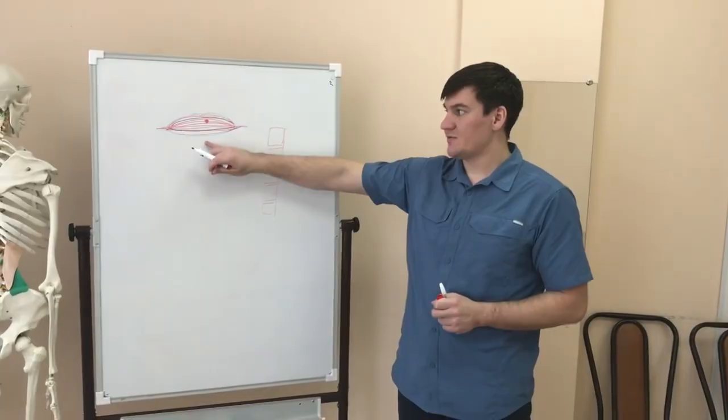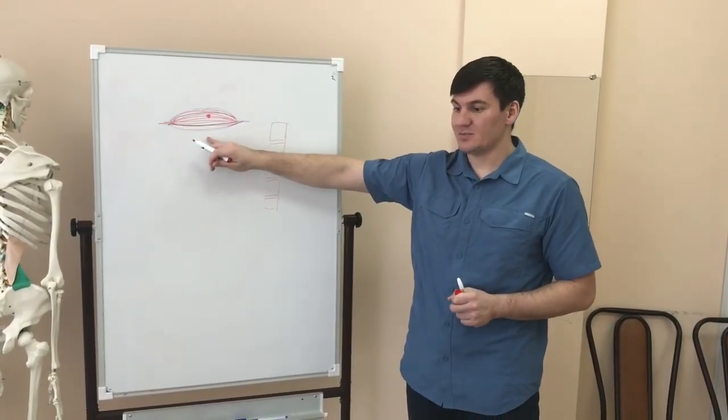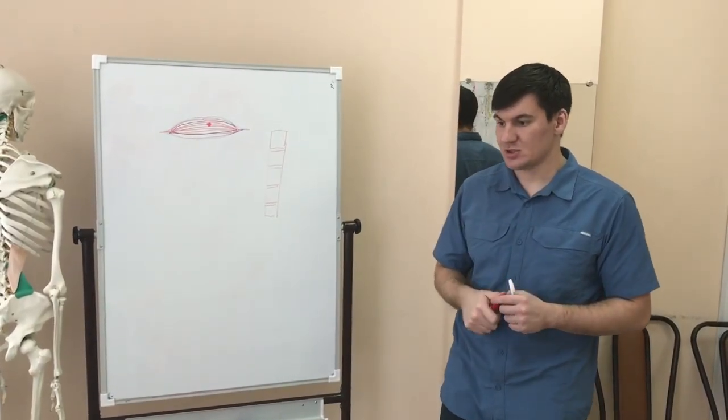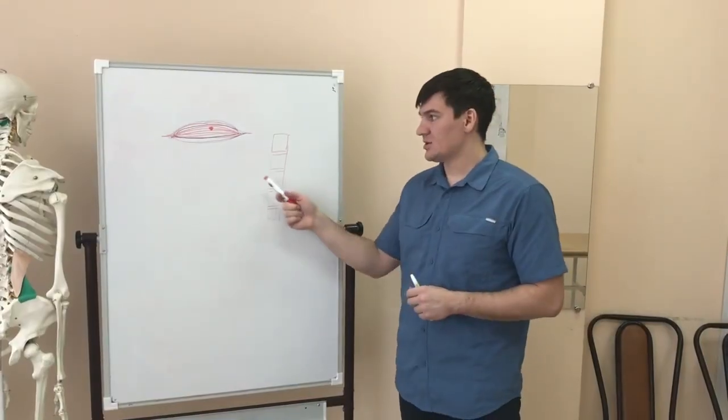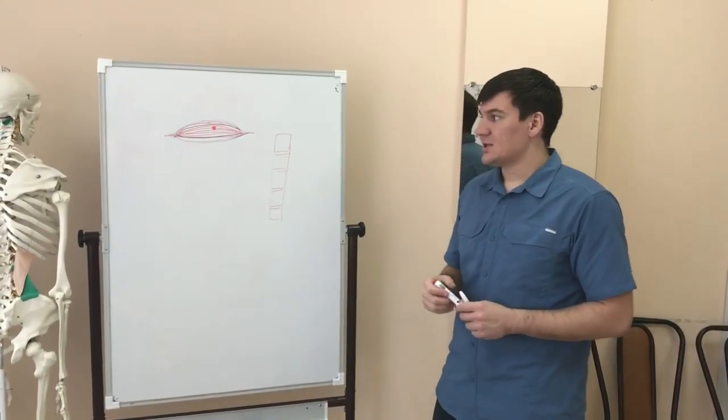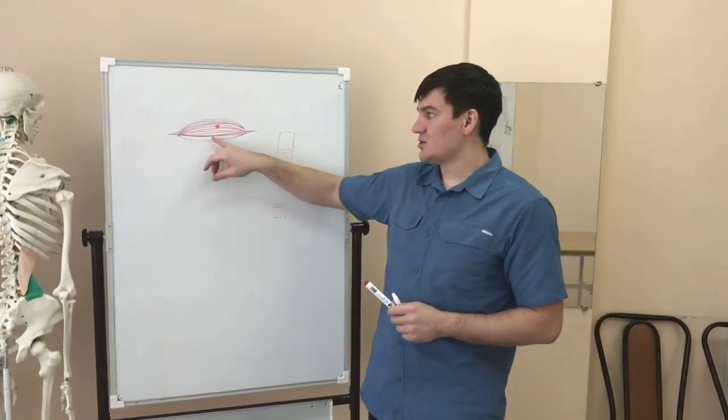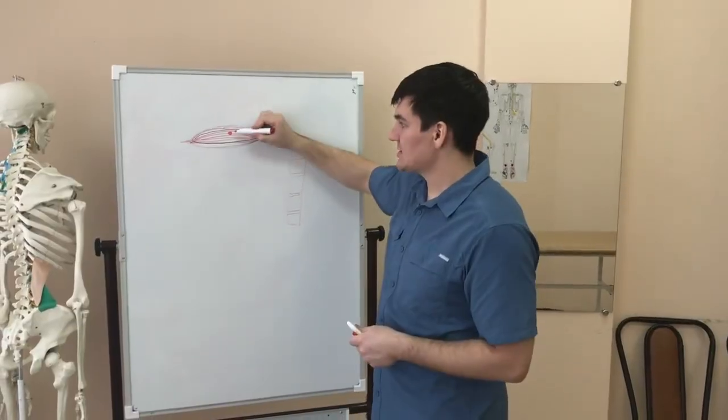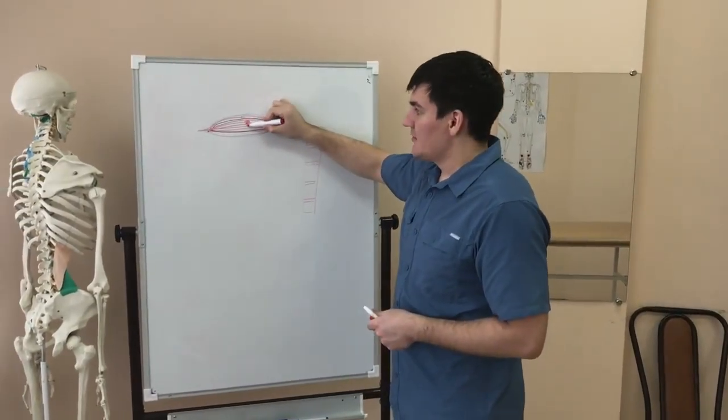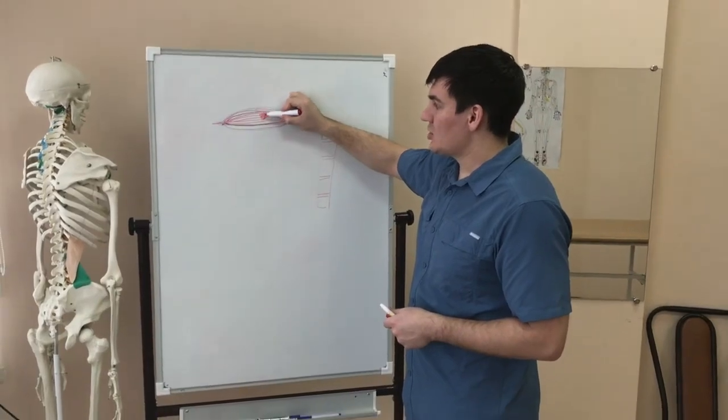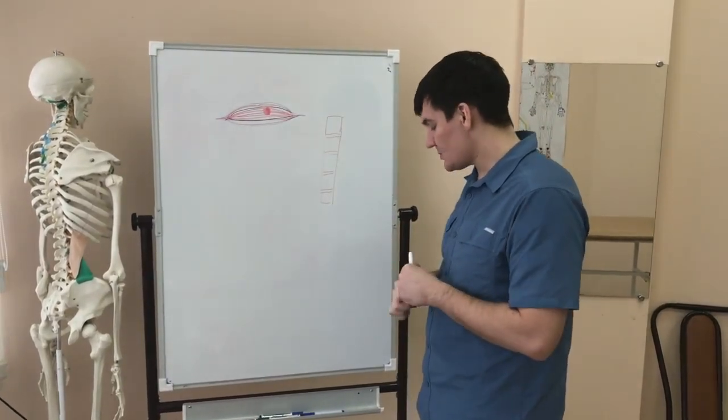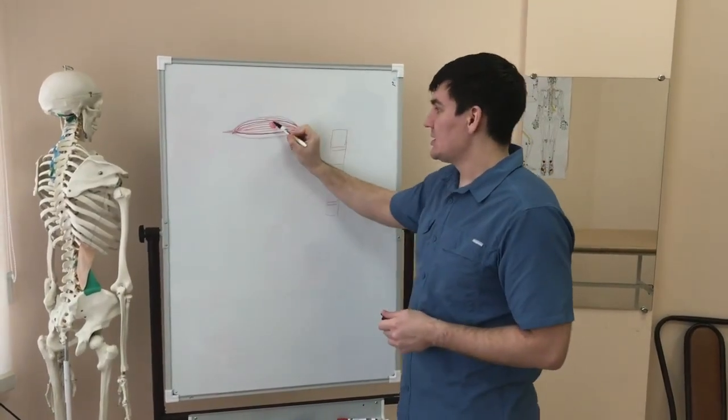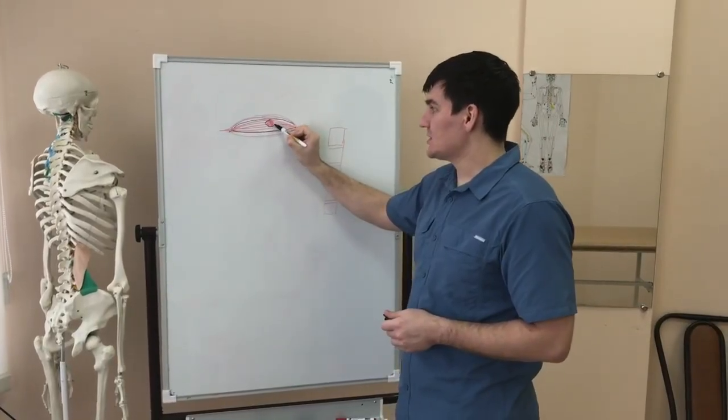The same thing happens in a muscle that is forced to be constantly tense. In order to relieve it at least a little, if it can't relax, a similar formation appears in it. This is what eventually leads to the formation of fibrosis, because then, when this process goes far enough, it can lead to this trigger point. It grows into an area of the muscle that is in constant spasm, and it can be surrounded by this fibrous tissue.